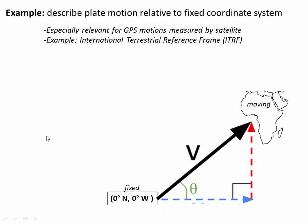Another approach is to describe plate motion relative to some fixed coordinate system, for example a latitude and longitude grid. Or if you work in the GPS world, you'll often take your fixed grid as being the International Terrestrial Reference Frame, or the ITRF. And this is especially useful for GPS data, because GPS inherently is measured from space and it's inherently an absolute motion relative to some terrestrial reference frame.